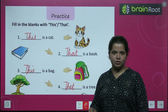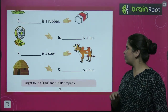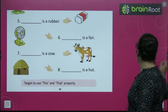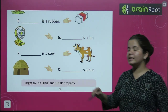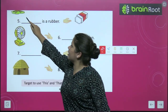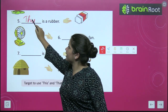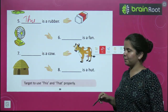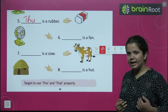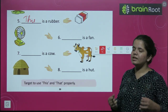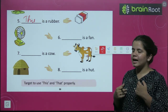ठीक है बच्चों, सब को समझ आया? चलिए. Fifth देखेंगे: dash is a rubber — this is a rubber. तो आप क्या लिखेंगे? 'This' लिखेंगे. जो चीज़ आपके पास है — 'this'. जो चीज़ आपसे दूर है — 'that'.